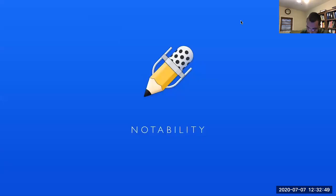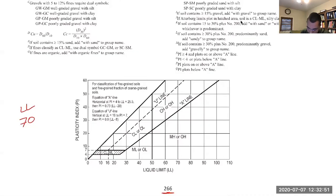In our particular case we have a liquid limit of 70 and we have a plastic limit of 48. To enter the chart we need the plasticity index, and the plasticity index is equal to the liquid limit minus the plastic limit. So we have 70 minus 48 and that's equal to 22.